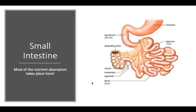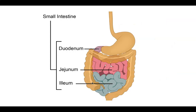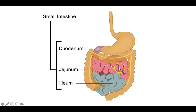Most nutrient absorption takes place in the small intestine. Looking at its layout: after the stomach, we have the duodenum — the shortest part — then the jejunum, then the ileum, which meets with the large intestine at the ileocecal junction.